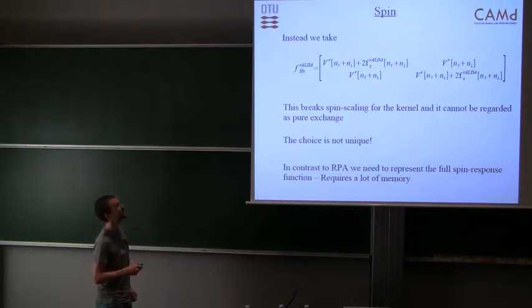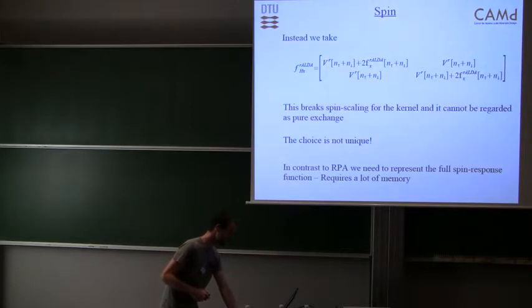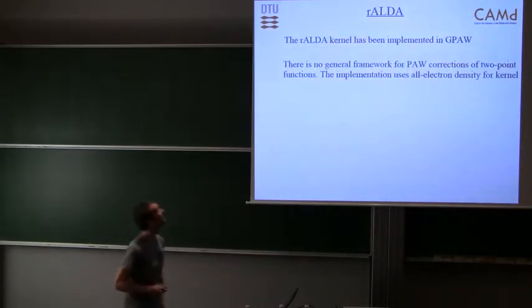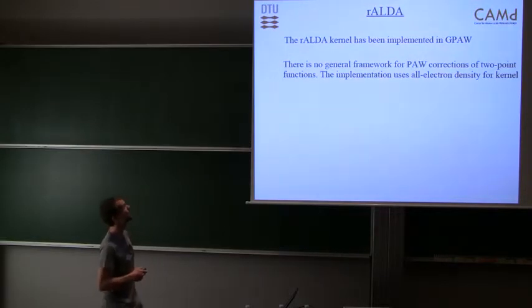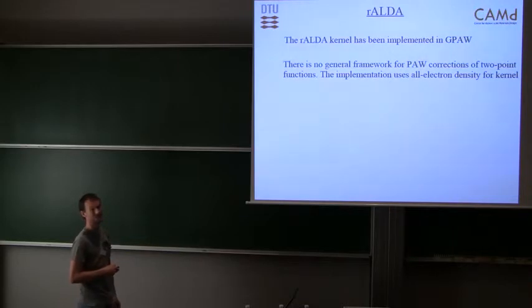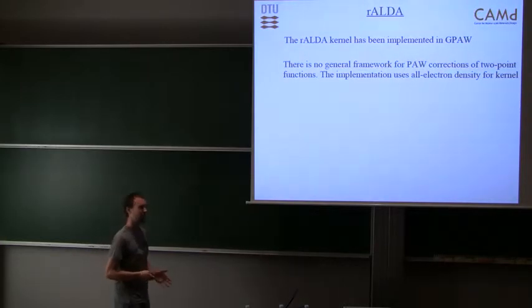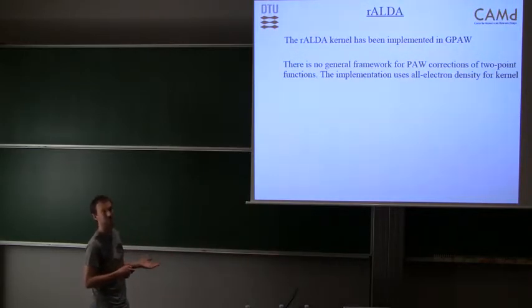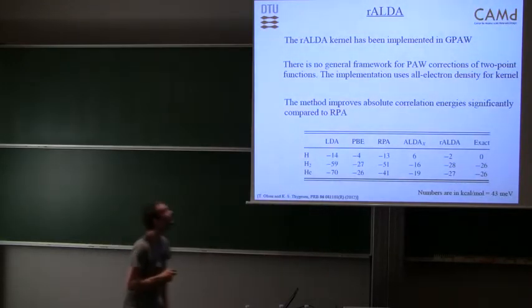It's been implemented in GPAW. I think there's no general framework for PAW corrections for two-point functionals, so what we do is we actually use the all-electron density when we evaluate the kernel. It turns out that this actually converges nicely with cutoff. I think the reason for this is that in the regions where the all-electron density oscillates a lot, the density is typically very large, and for large density the kernel will approach zero.